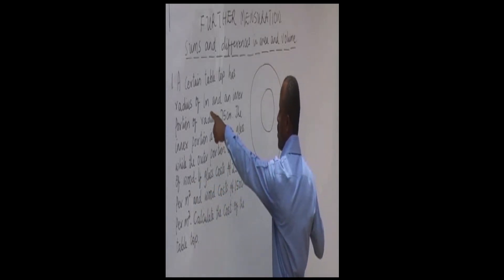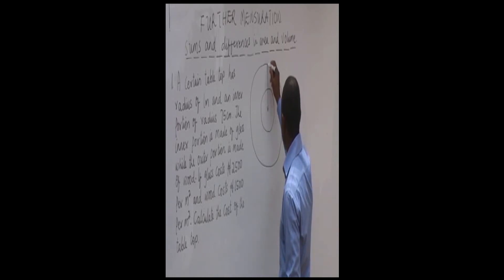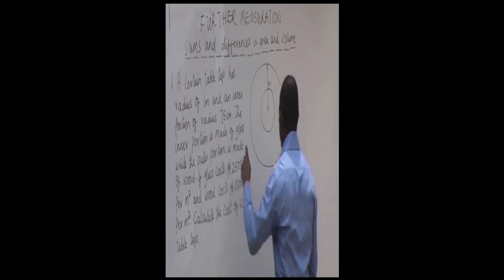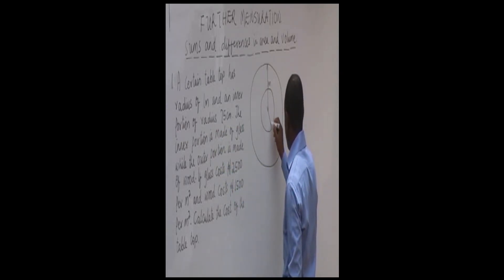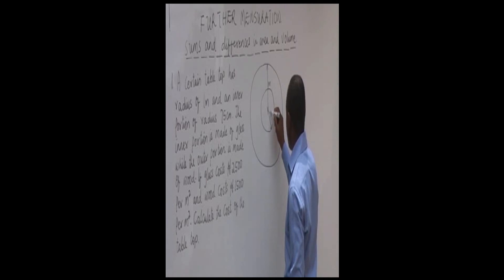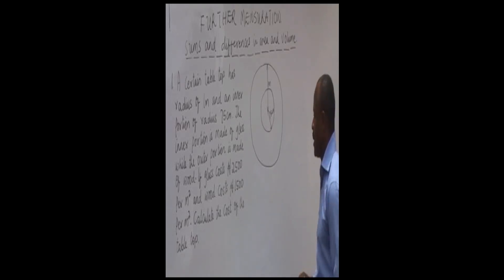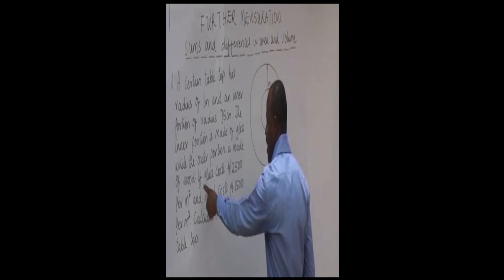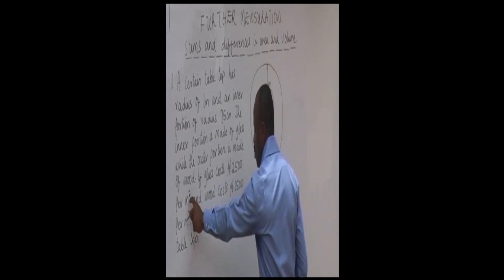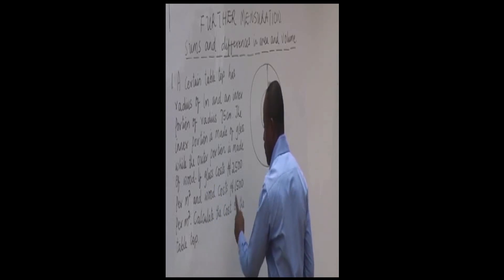The radius of the table top is one meter, so from the center to the edge is one meter. The inner glass portion has a radius of 75 centimeters. The question says glass costs 2,500 per meter squared and wood costs 1,500 per meter squared. We need to calculate the cost of the entire table top.